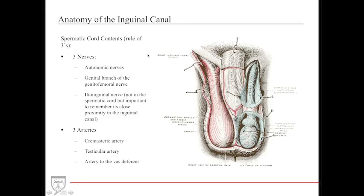The spermatic cord contents follow a rule of threes. There are three nerves: your autonomics, the genital branch of the genitofemoral nerve, and the ilioinguinal nerve — which does not actually travel inside the spermatic cord but runs through the inguinal canal on top of it. There are three arteries: the cremasteric artery, the testicular artery, and the artery to the vas deferens.